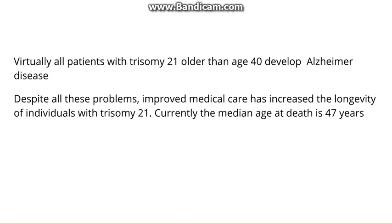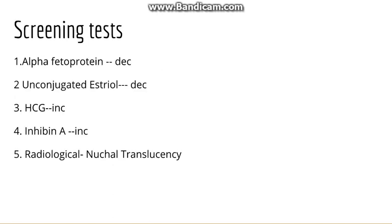The screening tests which are not very diagnostic are like alpha-fetoprotein is decreased, there is unconjugated estriol, HCG is increased than the normal pregnancy, inhibin A is increased, and on the radiological investigation we can see nuchal translucency. But the diagnostic one is the karyotyping. This was all about Down syndrome. Thanks for watching this video. Do like, share, and subscribe to my channel. Thank you.